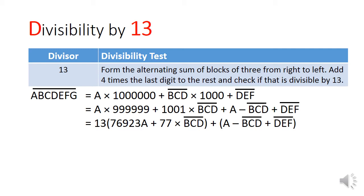You can see that the letter A is in the millionth place, so it's A times 1 million. This is 1 more than 999,999, which turns out to be a multiple of 13, 13 times 76,923. The chunk of 3 digits, B, C, D, are in the thousandth place. That turns out to be 1 less than 1001, which is also a multiple of 13, 13 times 77. This allows one to re-express the number into two chunks. The first part is a multiple of 13, and the second chunk, which I've highlighted in red, is the alternating sum of blocks of 3 digits, which needs to be checked for divisibility.